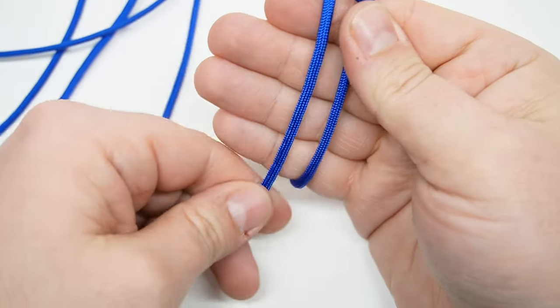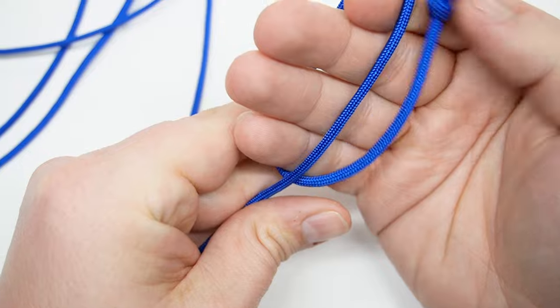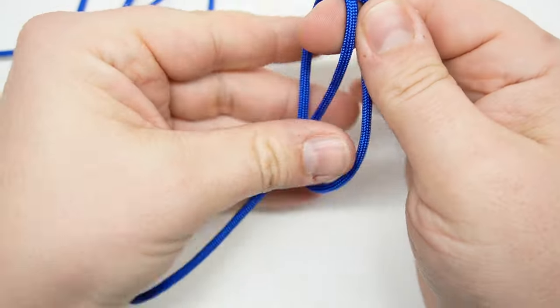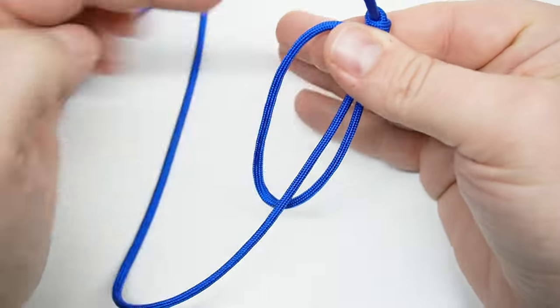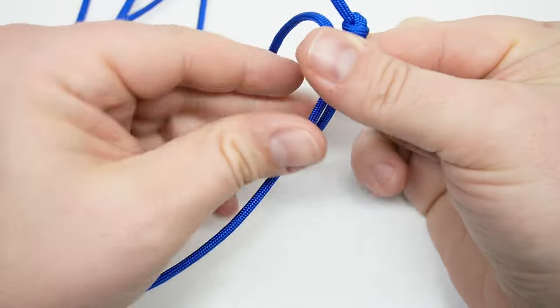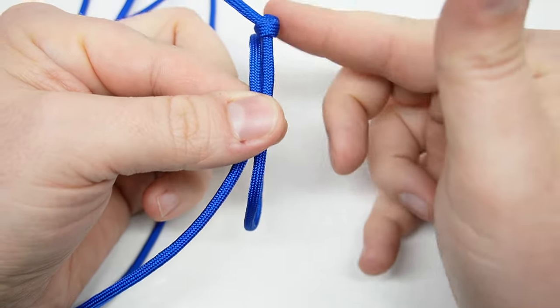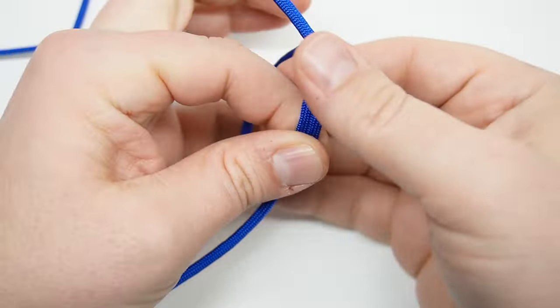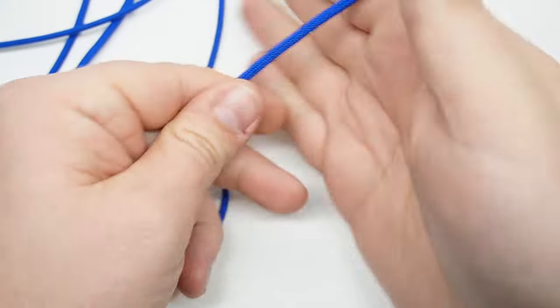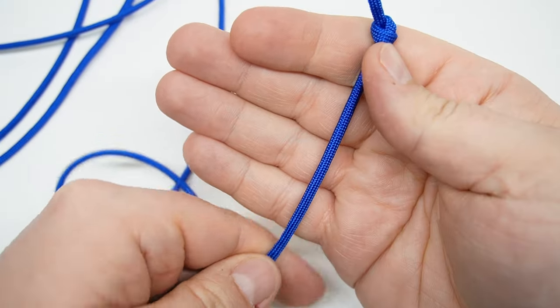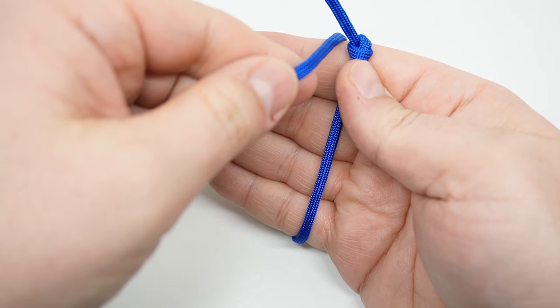You'll have something like this: from here down, back, and then back down this way. So wrap, that's one, and then down. That's one and a half.